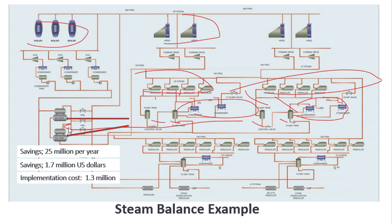First year savings, 25 million per year. I always put that in there, but the currency was rupiah. The real savings was 1.7 million US dollars converted. The implementation cost was 1.3 million. My point is they didn't know how to balance the system out until we did this balance and found that we could reroute piping back to the deaerator and achieve the savings. So it was very critical to have a steam balance.